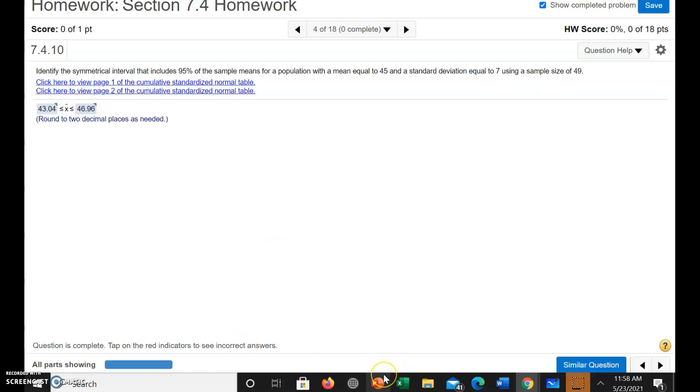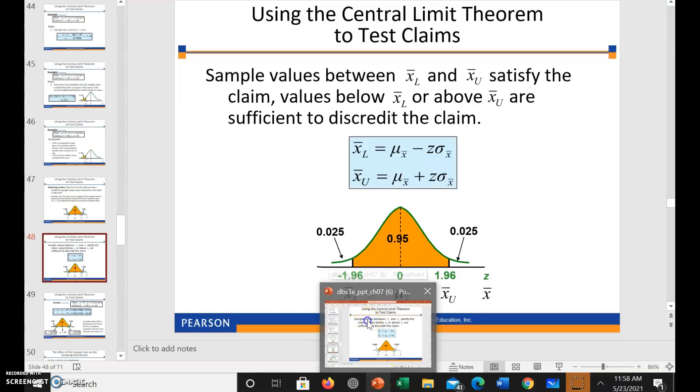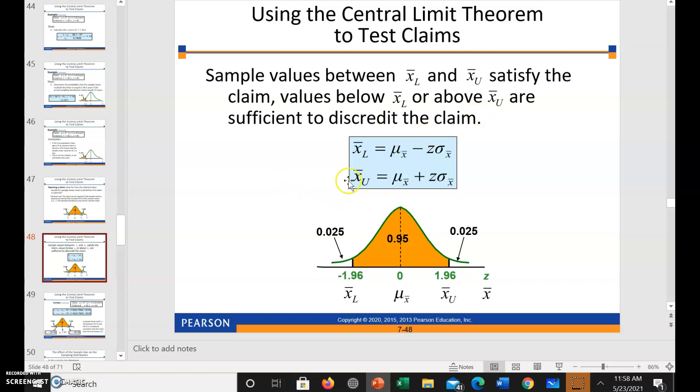So let's look at what we're doing here. The central limit theorem, if you're wanting to know 95% of the interval, that would be from here to here around the mean.